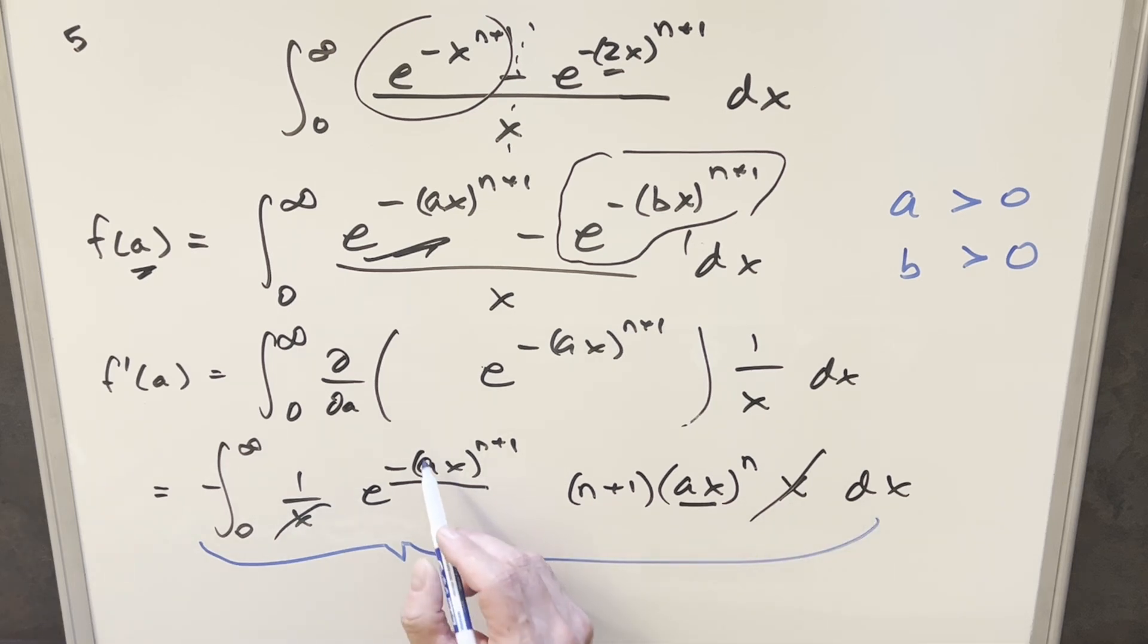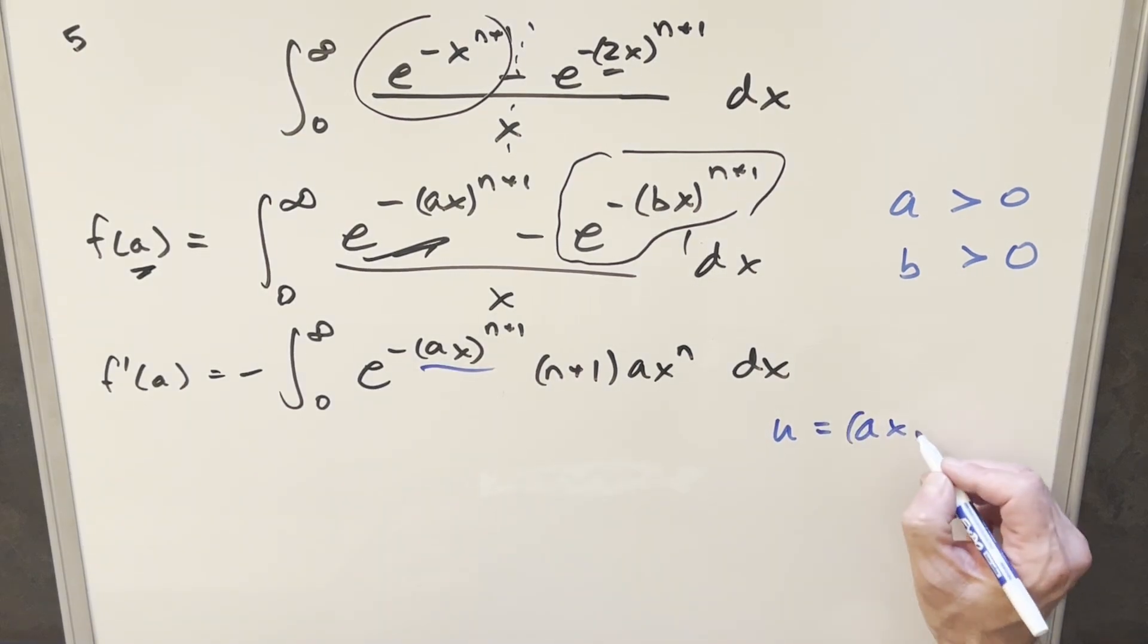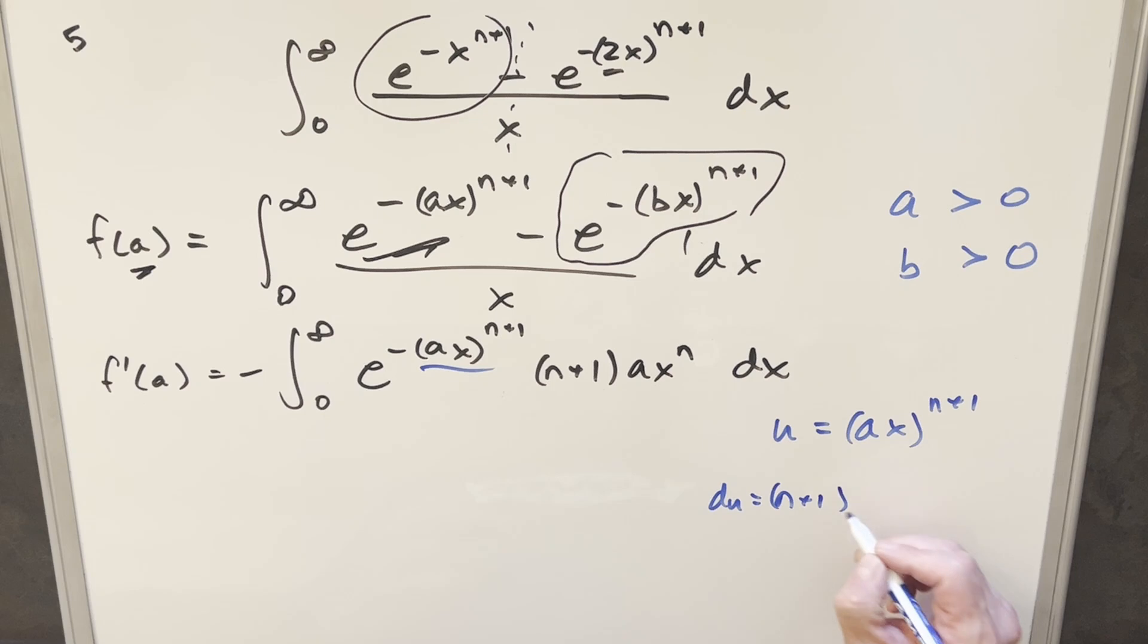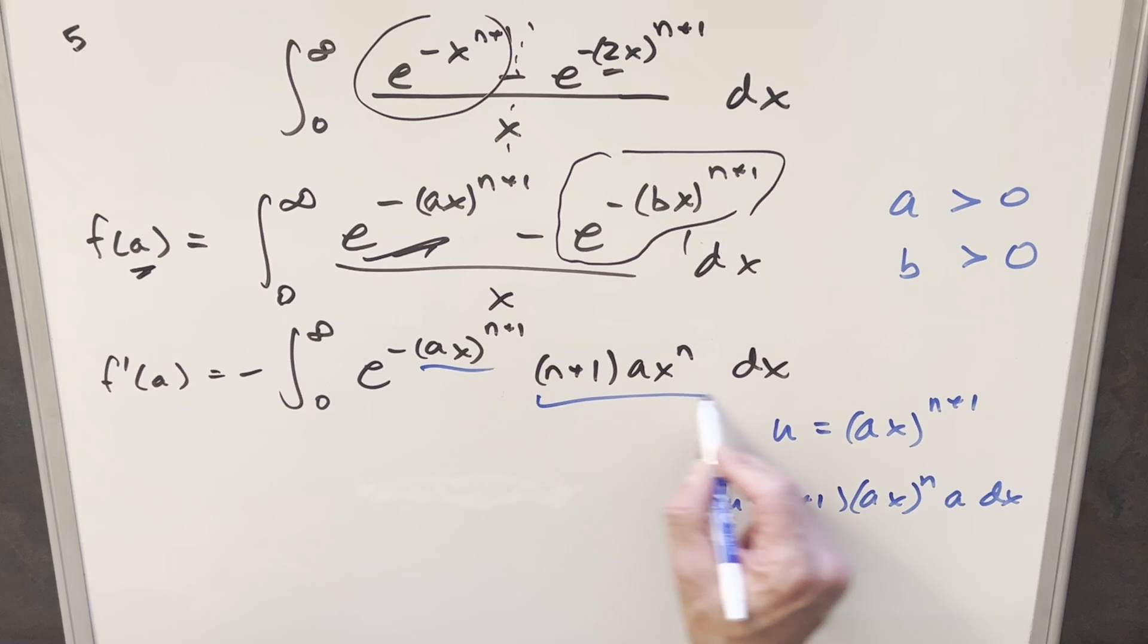And then with what's left here, this should be an integral we can do. We can do just a u substitution on it. If I do my u for just this part right here, the derivative of that's going to be something like all the stuff we have over here. So now what we'll do is go ahead with this u substitution. I'm going to make my u equal to everything over here. So we're going to say u is going to be ax to the n plus 1.